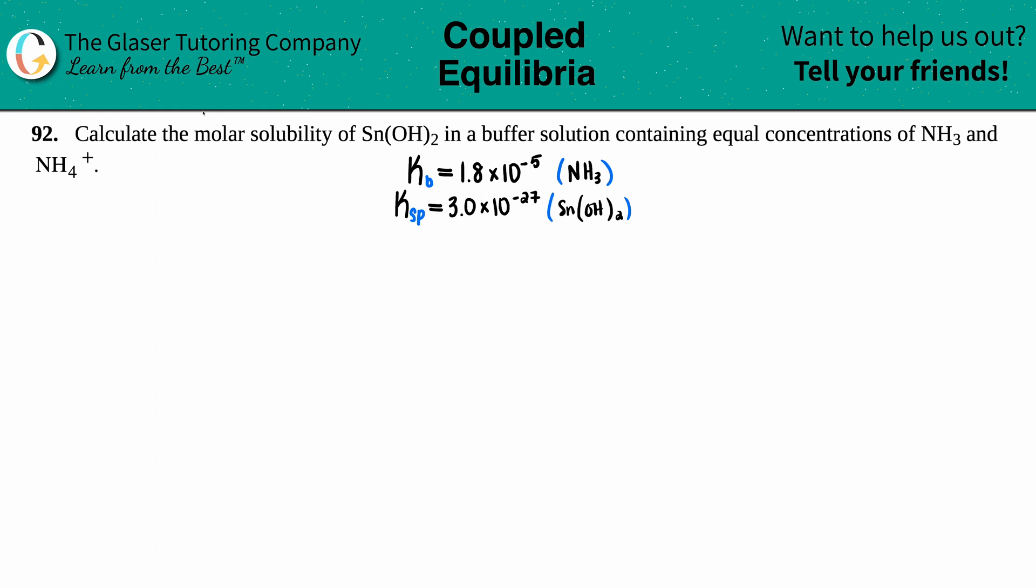Number 92: Calculate the molar solubility of Sn(OH)2 in a buffer solution containing equal concentrations of NH3 and NH4+. In order for this question to work out, we had to find the corresponding K values for the compounds they gave us.